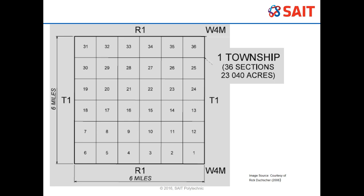Why would we start counting in the bottom right-hand corner and snake our way up? The answer is that most settlement started in the east and moved to the west, so it made sense to start there and continue on. Also, as they went north there were fewer people, so they'd snake back and forth to save time and make it efficient.